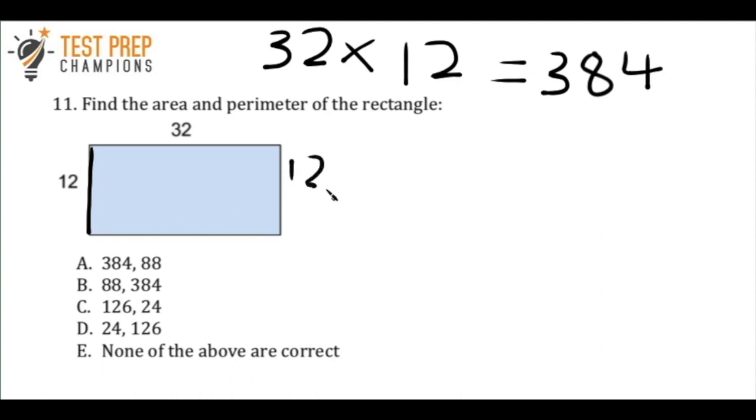which is the other part of the rectangle, is also 12 and vice versa for 32. So if this side of the rectangle is 32, the other side is also going to be 32. And there's two ways to think about this.